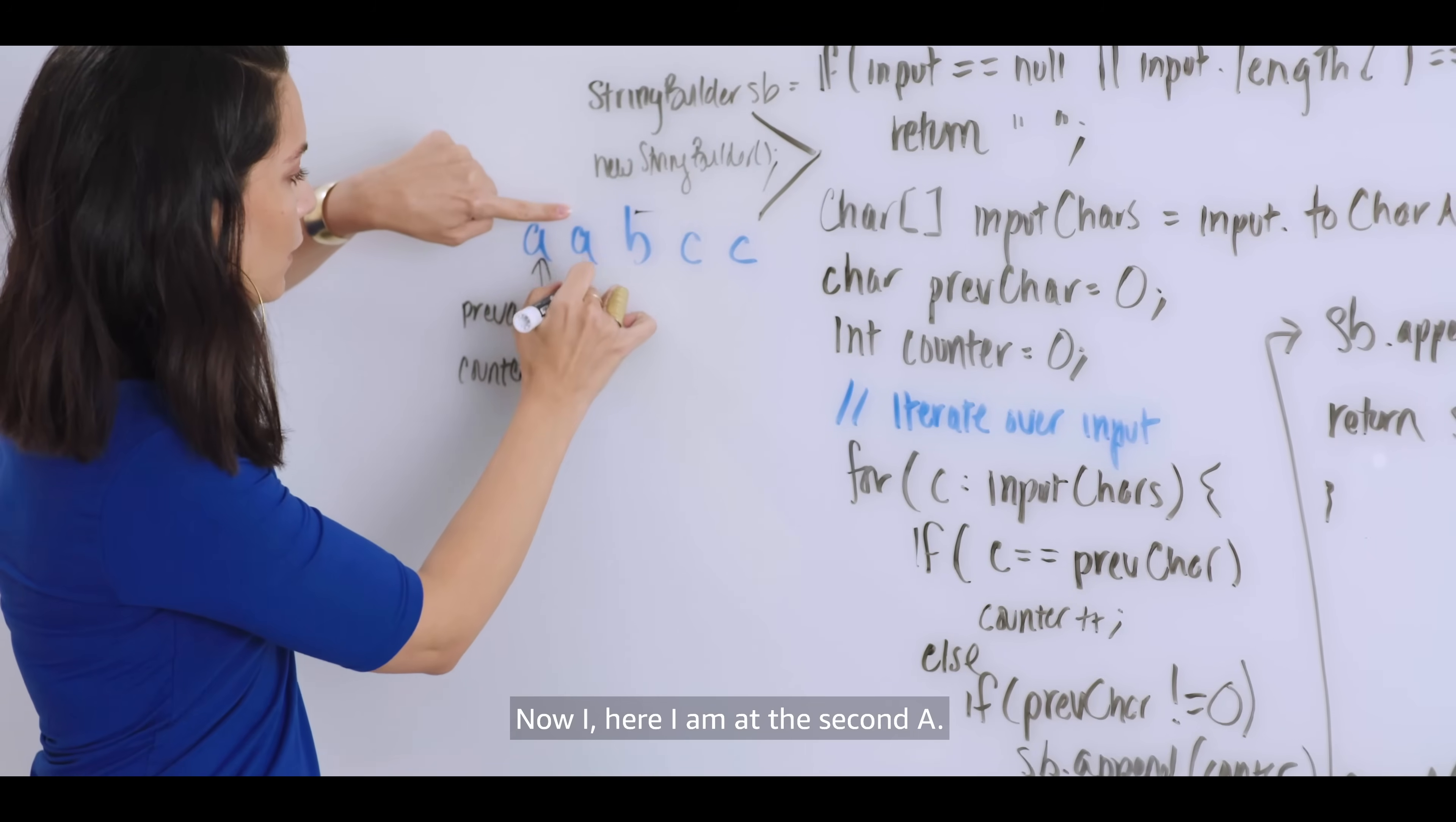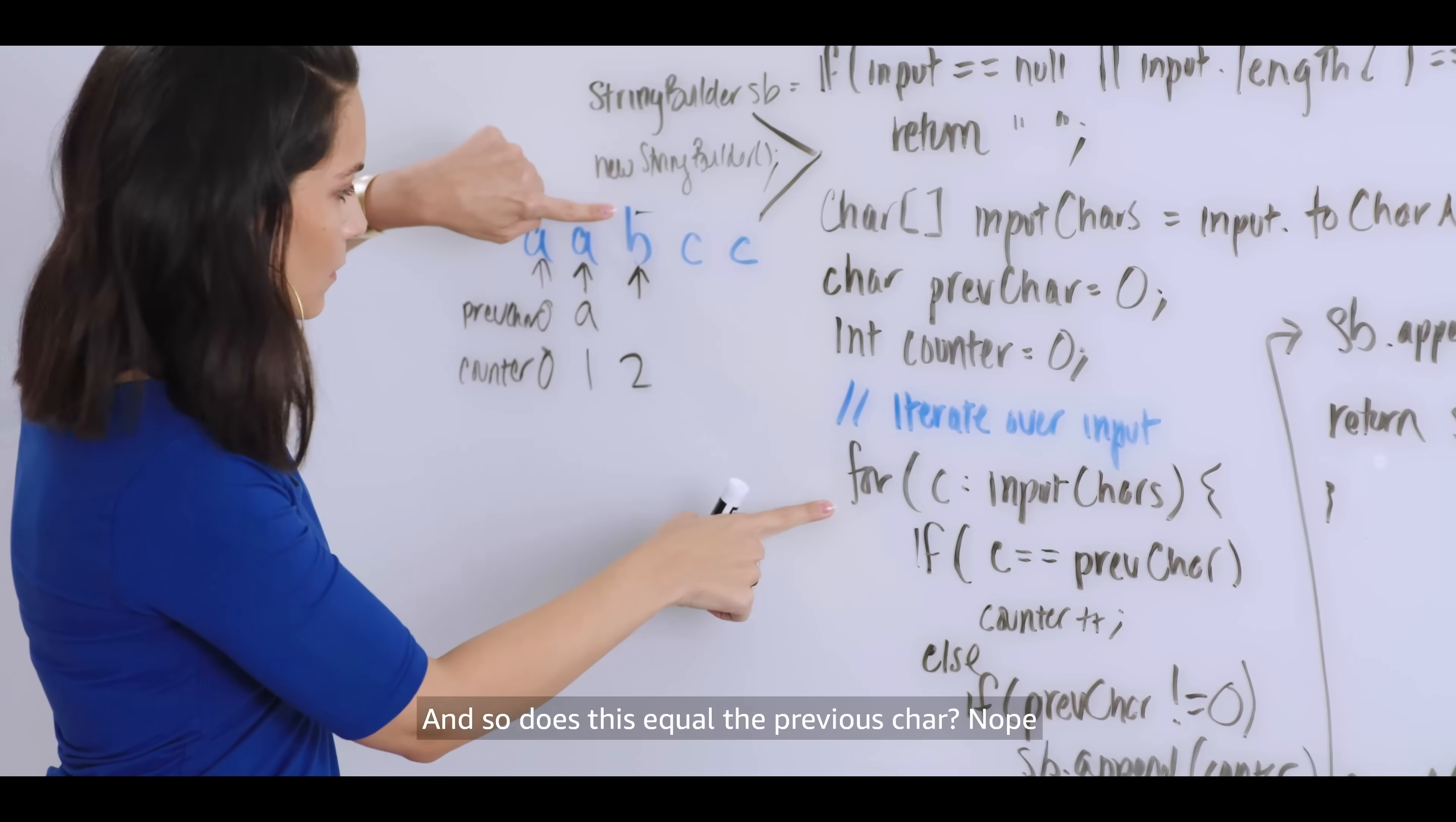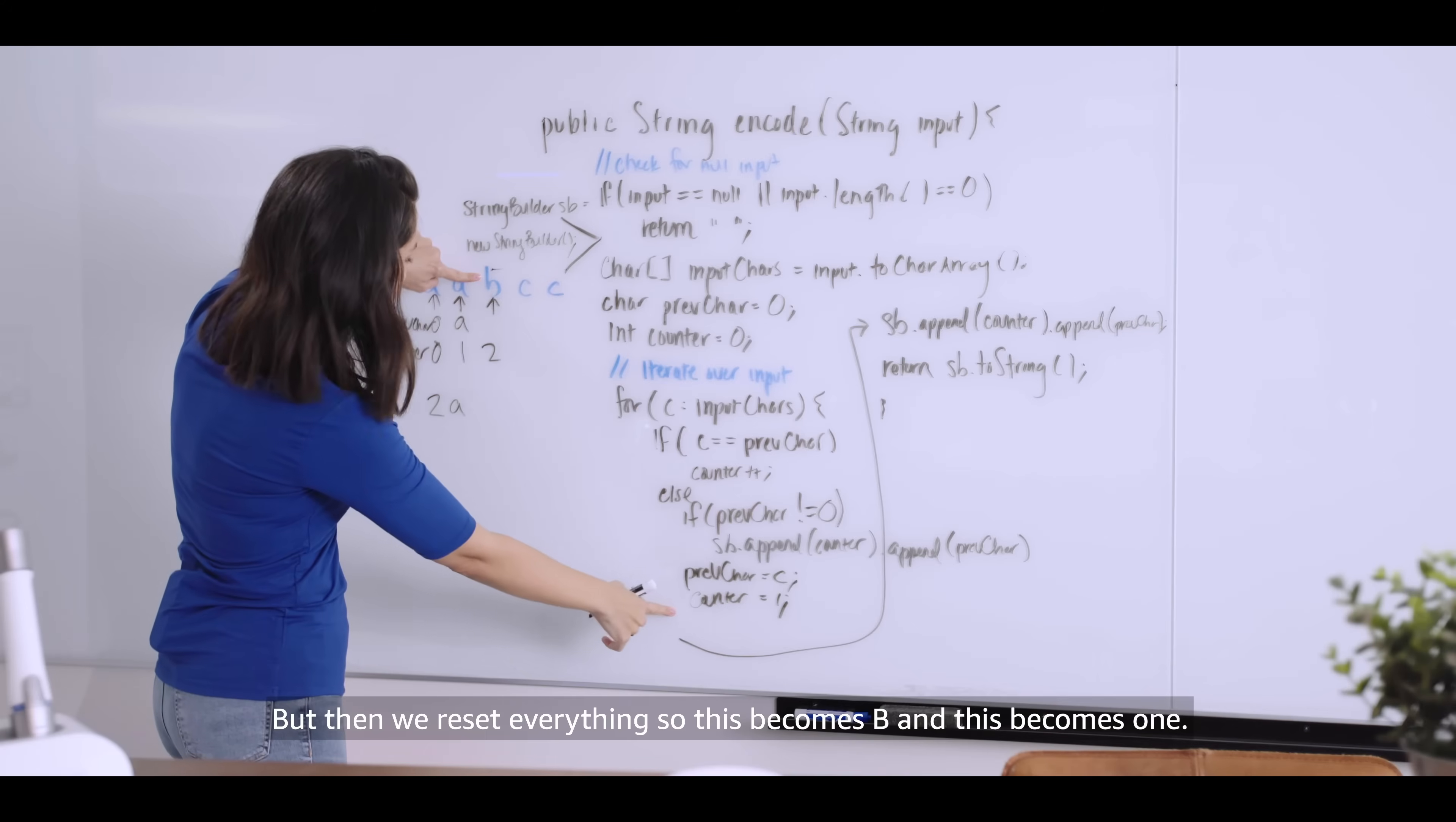Go back to the top of the for loop. Now here I am at the second A. Okay. Does this equal the previous char? Yes, it does. So we increment the counter. Then we go back out and now we're here at B. And so does this equal the previous char? Nope. We go into this elseif condition. And it's not zero. So then we say, all right, time to append to our string builder. So the counter is currently 2 and A, our previous char. But then we reset everything. So this becomes B and this becomes 1.